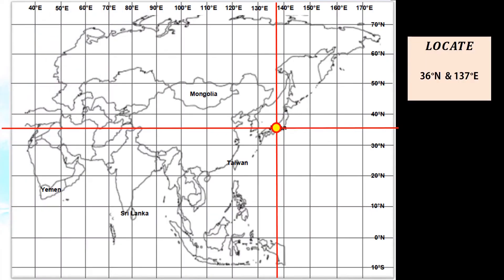This is the coordinate of 36 degrees North and 137 degrees East. The country located at this coordinate is Japan.